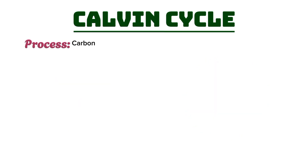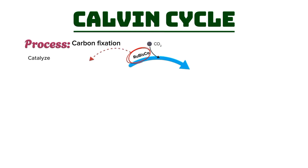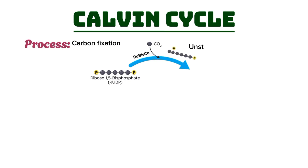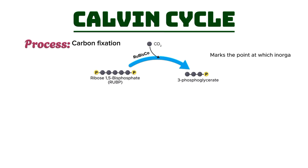Each phase plays a critical role in the conversion of carbon dioxide into glucose. The first phase is carbon fixation. In this step, carbon dioxide from the atmosphere is incorporated into an organic molecule. The enzyme RuBisCO, which is actually the most abundant enzyme on Earth, catalyzes the reaction between carbon dioxide and a 5-carbon sugar called ribulose-1,5-bisphosphate (RuBP). This reaction creates an unstable 6-carbon compound, which quickly breaks down into two molecules of 3-phosphoglycerate (3-PGA). This phase is crucial because it marks the point at which inorganic carbon is converted into a usable organic form.